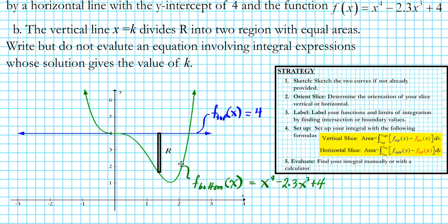We also need to label our points of intersection. Since we're slicing vertically, that means we're going to be integrating horizontally. So we need to know the x-coordinates of the intersection points on both sides.